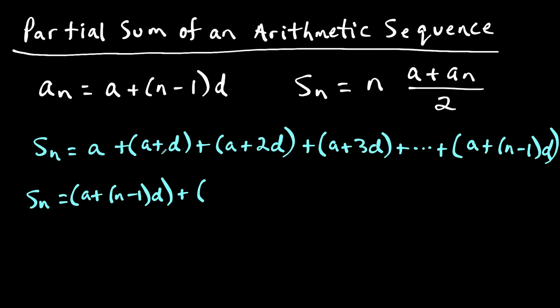I would have 3, 2, 1, and then 0 times d. So right before n minus 1, I would have n minus 2 times the common difference. And I would add this up all the way to the end until I get to the first term, which would be a.